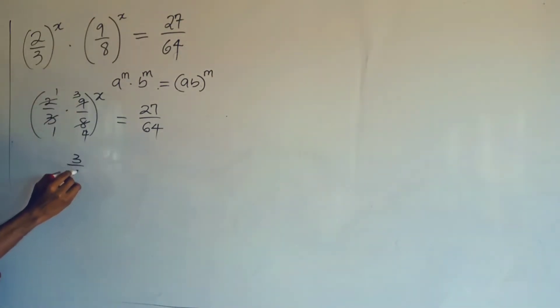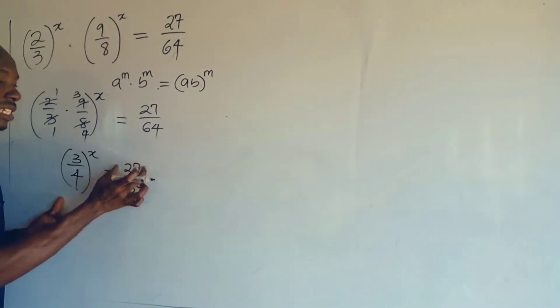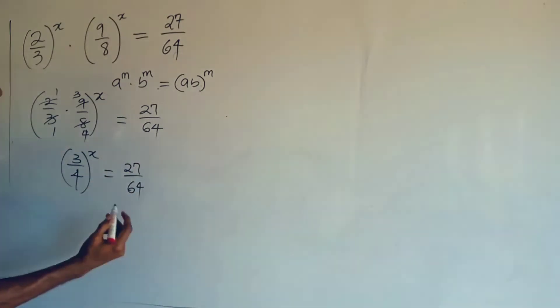Okay, the next thing I want you to realize is that 27 and 64 can be written in index form of 3 and 4 respectively. So what I'm saying in essence is that 27 can be written as 3^3, and 64 can be written as 4^3.